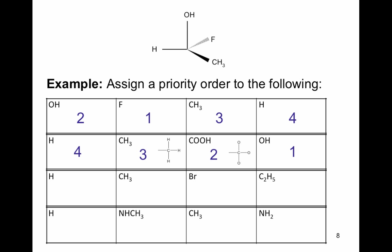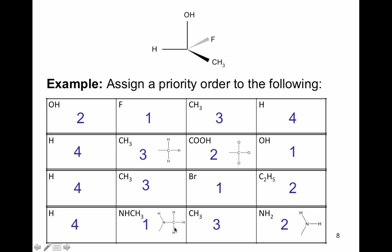Row three: hydrogen is the lowest, bromine is the highest. There's again a tie between two carbons. One has only bonds to hydrogen (atomic number 1); the other has a bond to carbon (atomic number 12), so C2H5 would be priority two and CH3 would be priority three. The last row: hydrogen is lowest, and nitrogen appears twice for priorities one and two. The nitrogen bonded to both hydrogen and carbon beats the one bonded to two hydrogens, so it gets priority one.